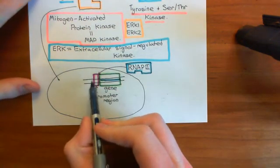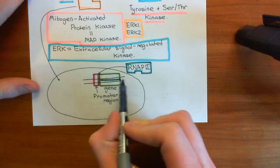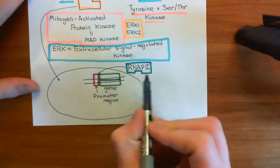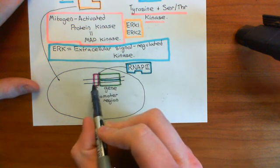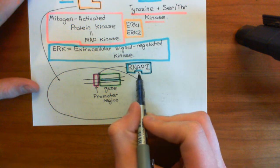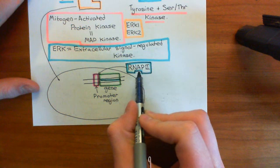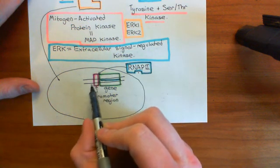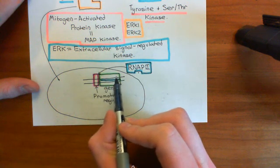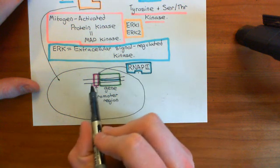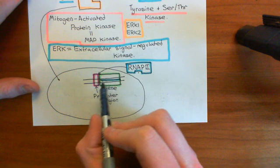If the promoter region has a very high affinity for binding to RNA polymerase 2, you'll get a large amount of transcription, produce a lot of mRNA, and therefore a lot of protein — the gene will have a high expression level. If on the other hand the promoter region has a really low affinity for RNA polymerase 2, you'll get hardly any mRNA being produced and therefore hardly any protein.